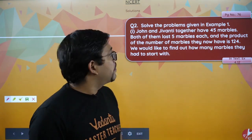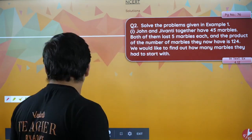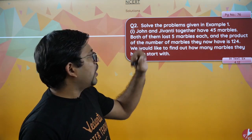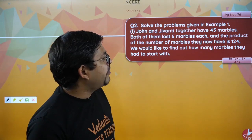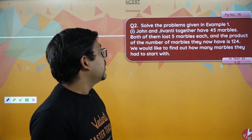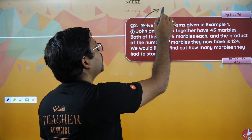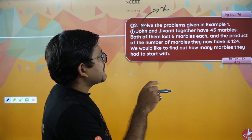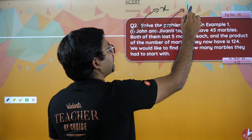Let's start. The question is a word problem — you have to make a quadratic and then solve it. John and Jivanty together have 45 marbles. I don't know how much John has and how much Jivanty has. So I think John has x marbles. If John has x and the total is 45, then it's obvious that Jivanty has 45 minus x.